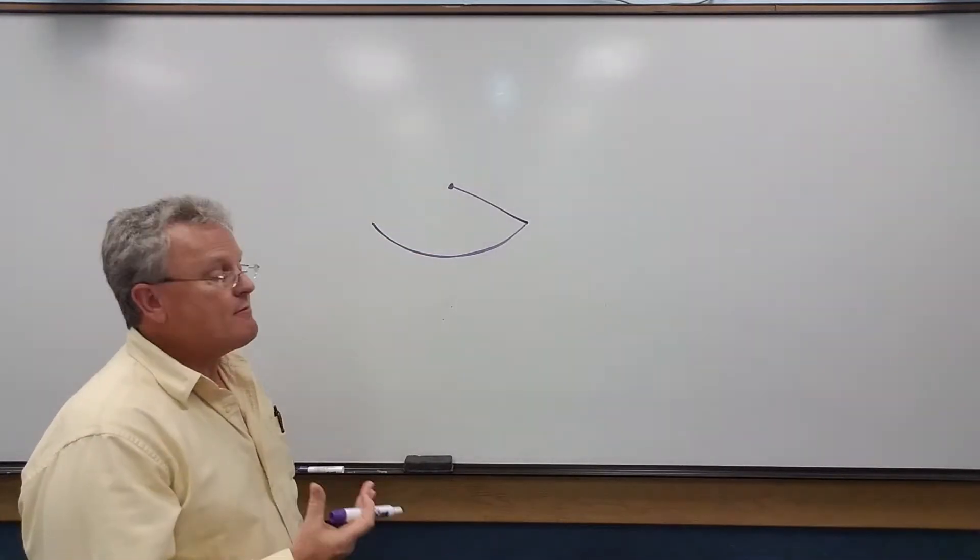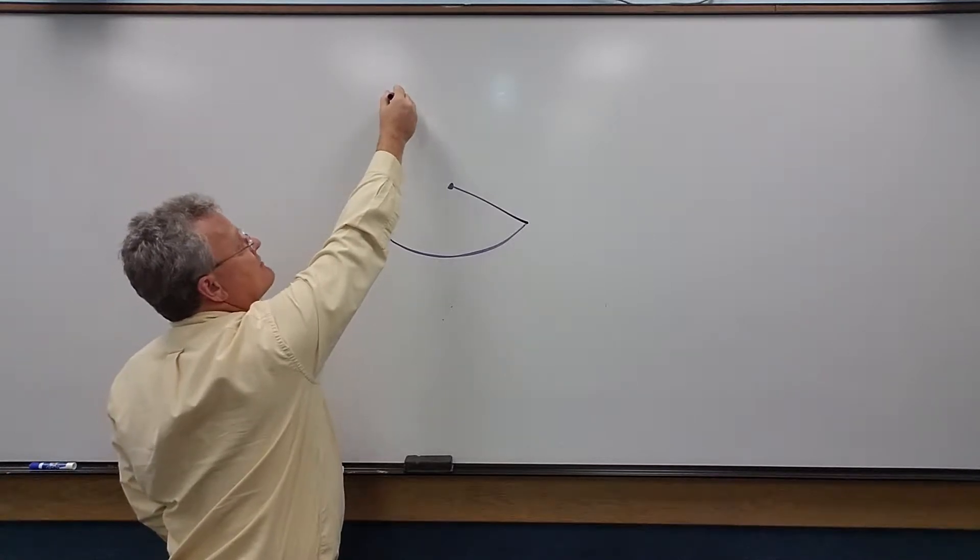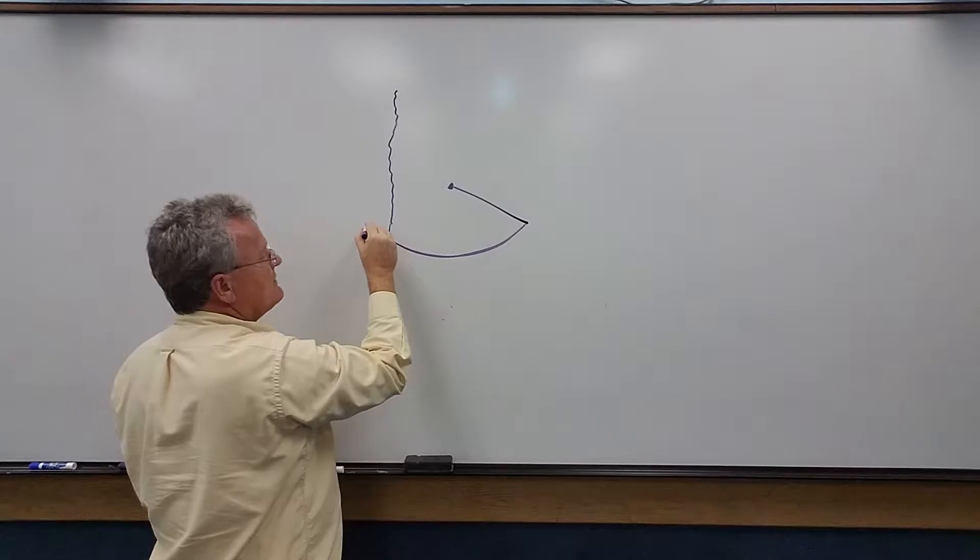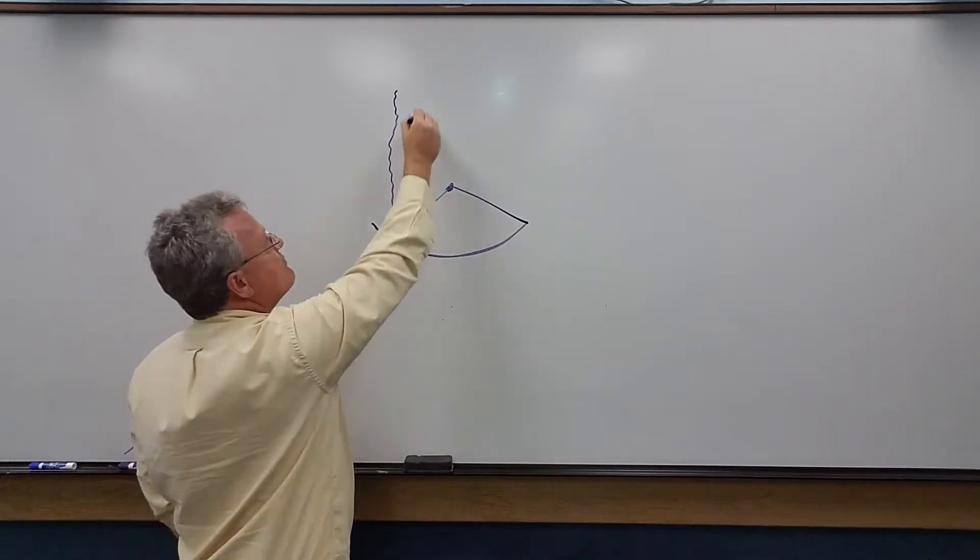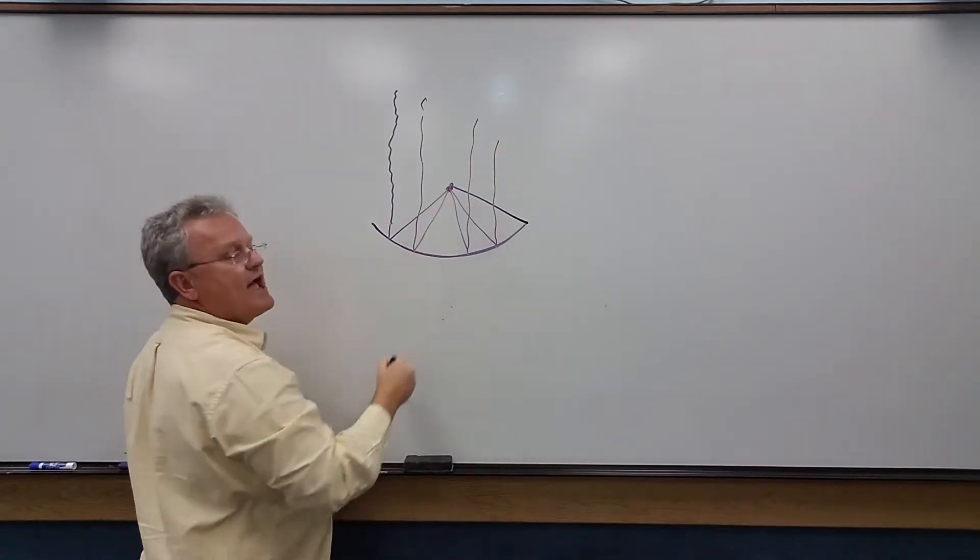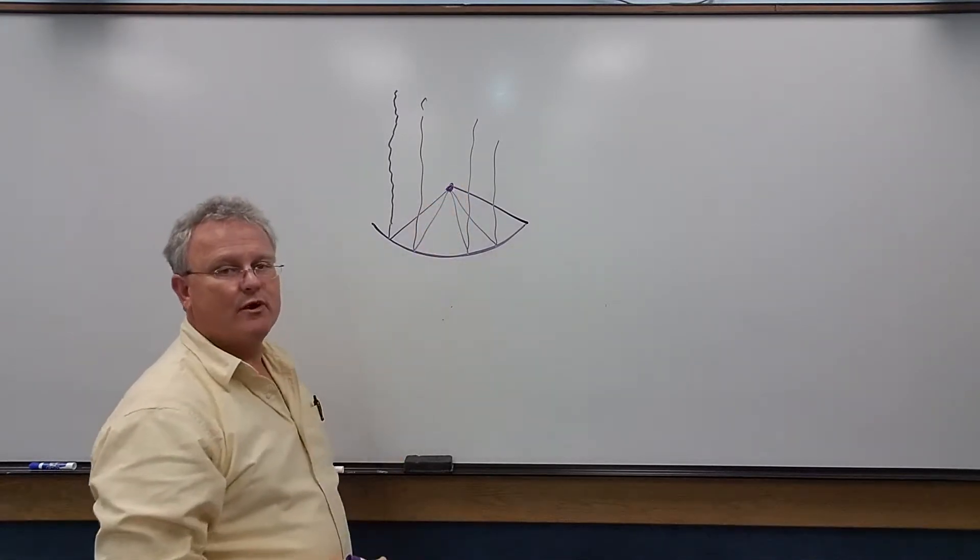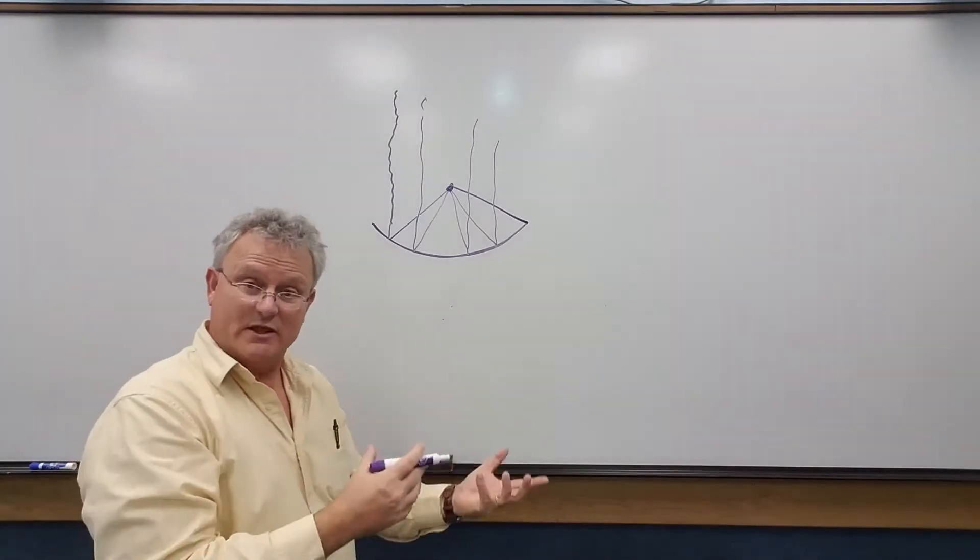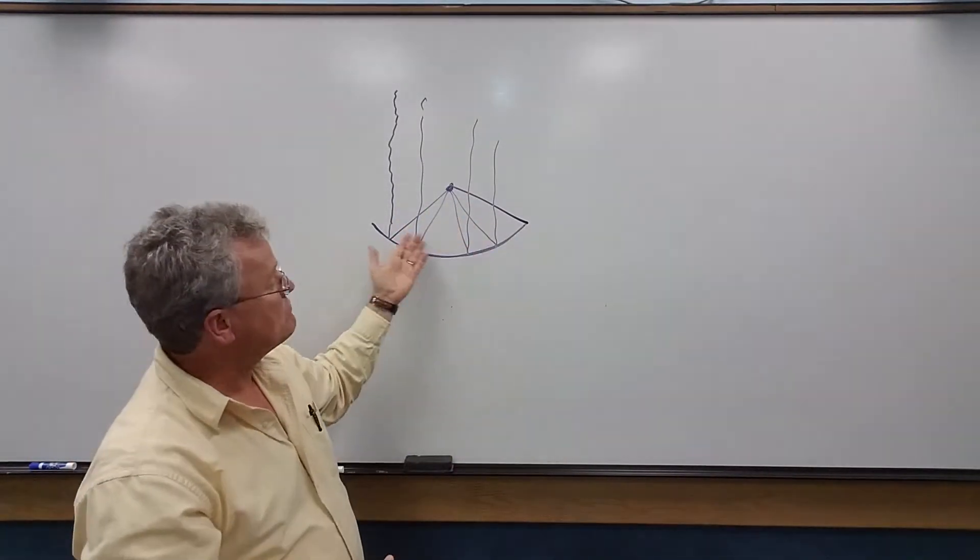Now, the nature of a parabola is the following. Whenever a radio wave comes down from outer space, no matter where it hits the satellite dish, they all get reflected to that point right there. It doesn't matter where it hits it. That's what happens. They all get focused to that point right there. That is the focus that we learned or we found earlier when we solved problems with parabolas.